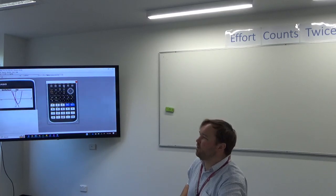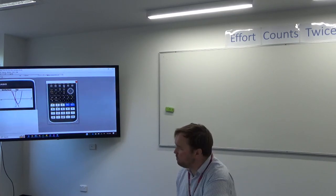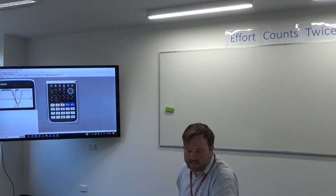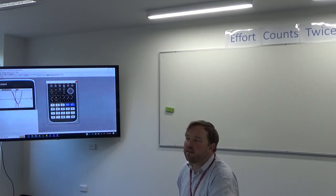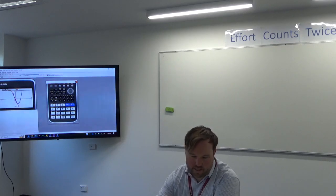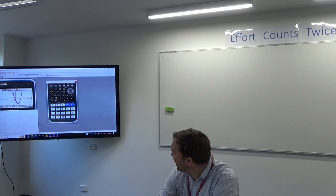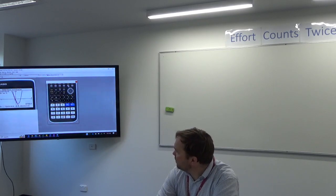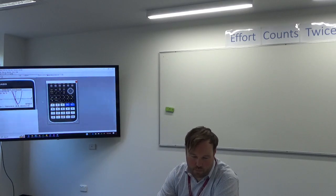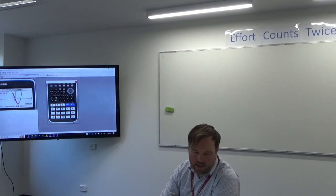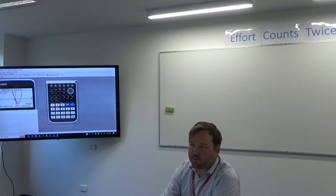And then you should have a graph that looks something like what's on the board. Now, we can see that the line is intersecting at two places. So our calculator can hunt this down pretty easily for us. If you hit G solve, intersect, so F5 and then F5 again, it'll give you one answer as minus 1.73 and the other answer as positive 1.73.